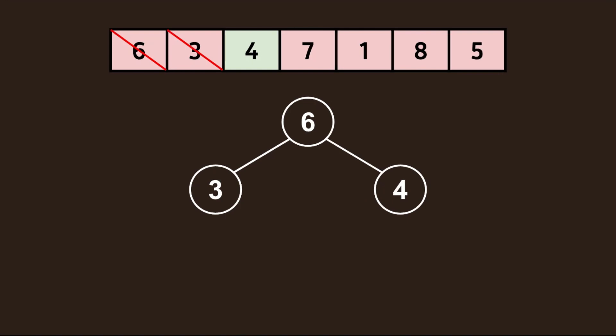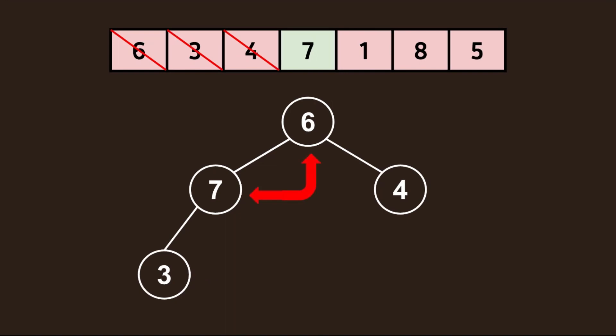The next value in our array is 7. Comparing this value to 3, we need to perform a swap operation. But the condition still hasn't been met, so another swap operation needs to be performed.